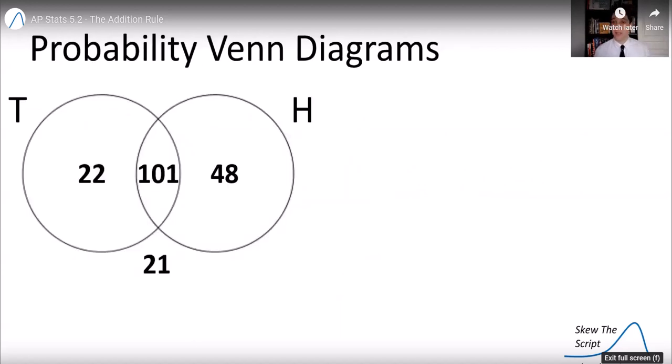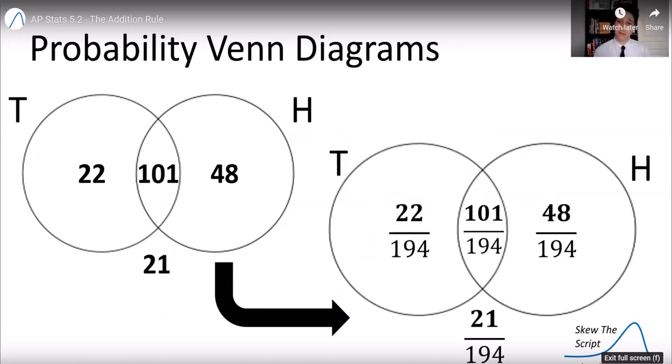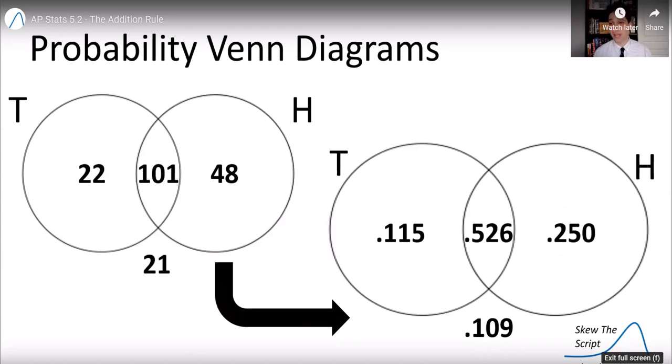So just like with two-way tables, Venn diagrams can also be presented in a probability format. They just divide by the total denominator, and you get the percentages there.